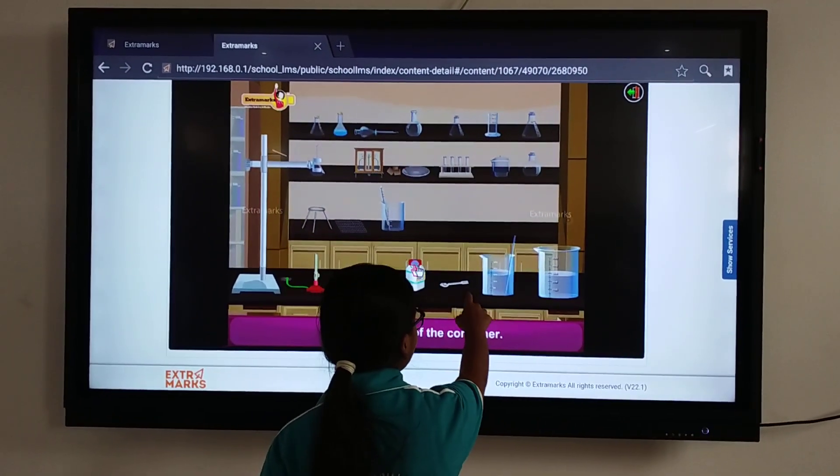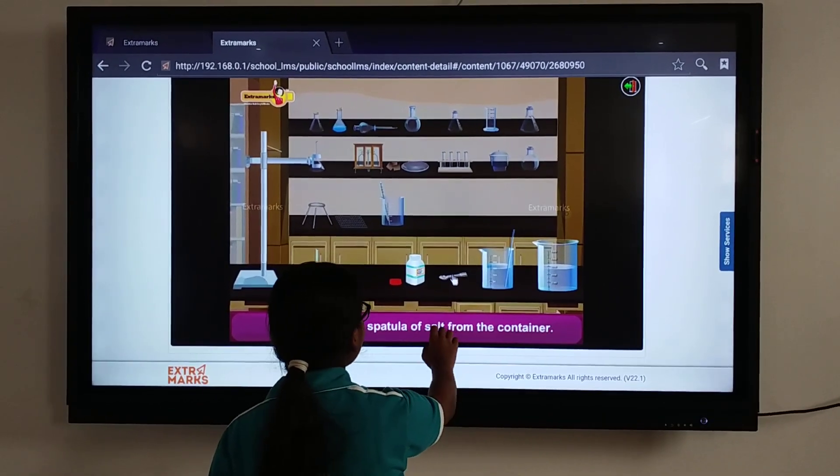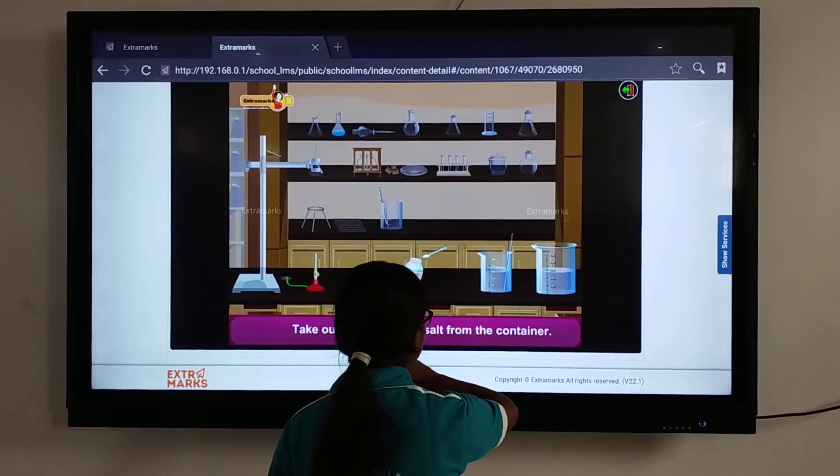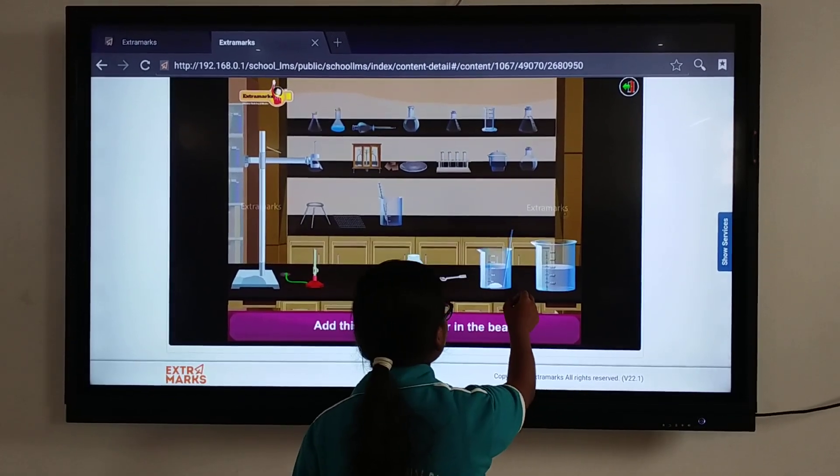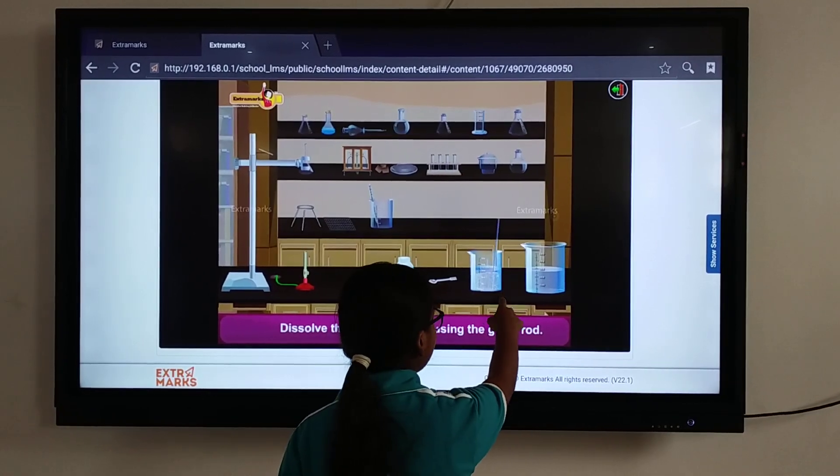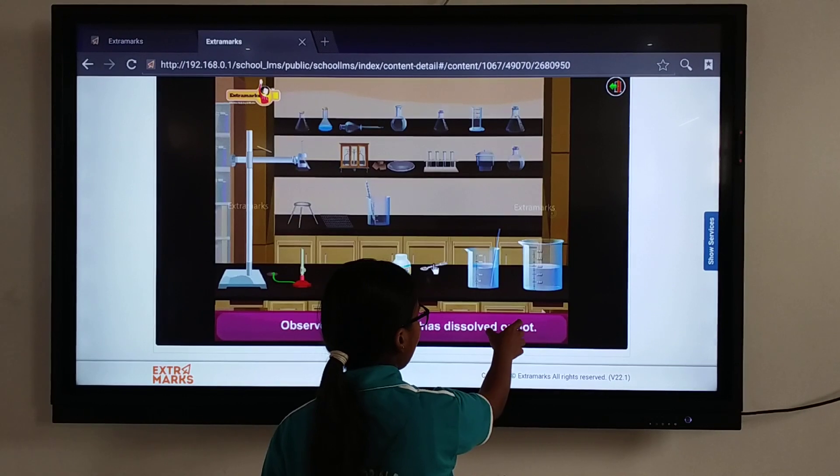Take out one spoonful of salt from the container and add this salt to the water in the beaker. Dissolve the salt while stirring using the glass rod. Observe whether the salt was dissolved or not.